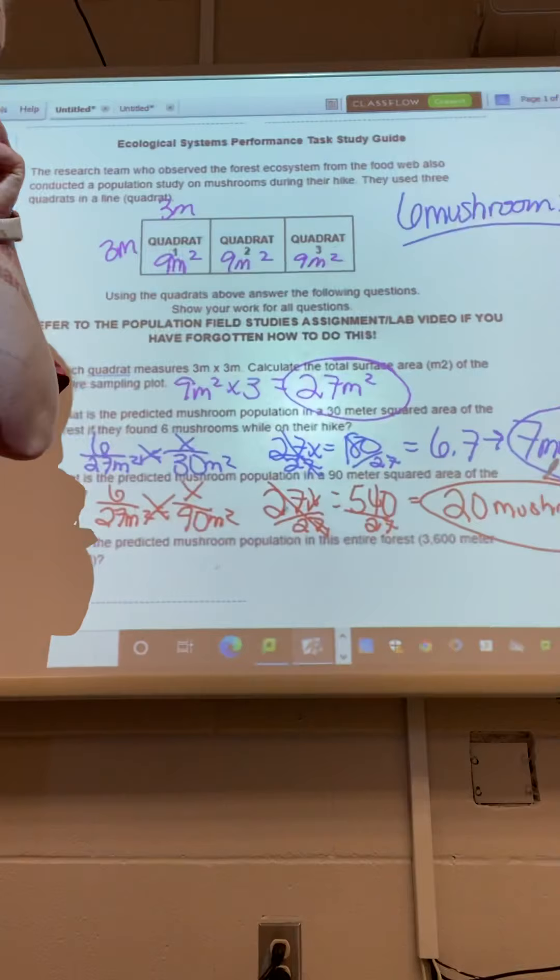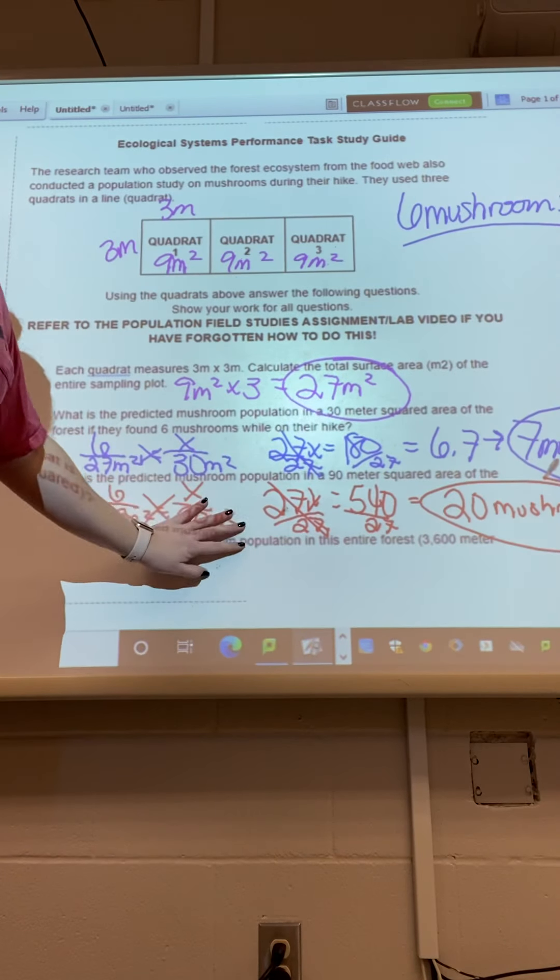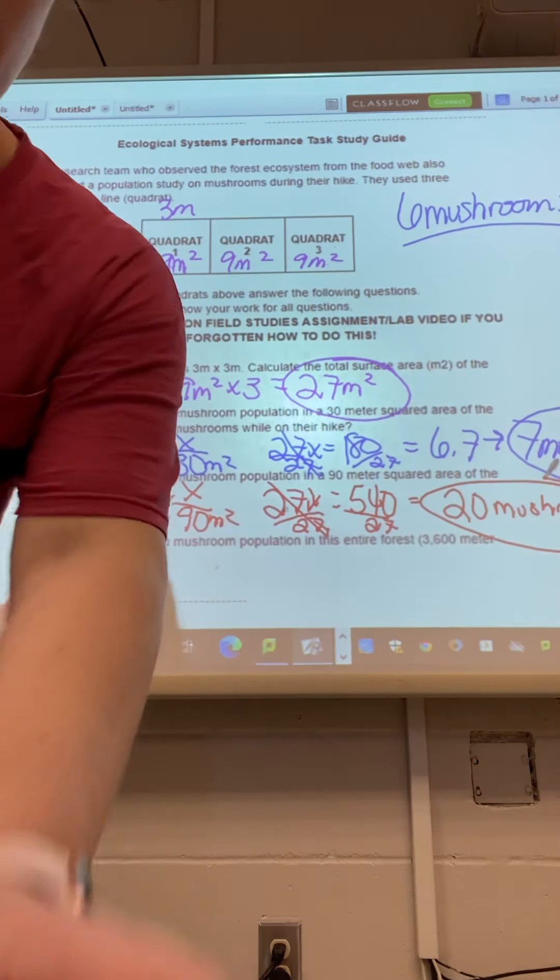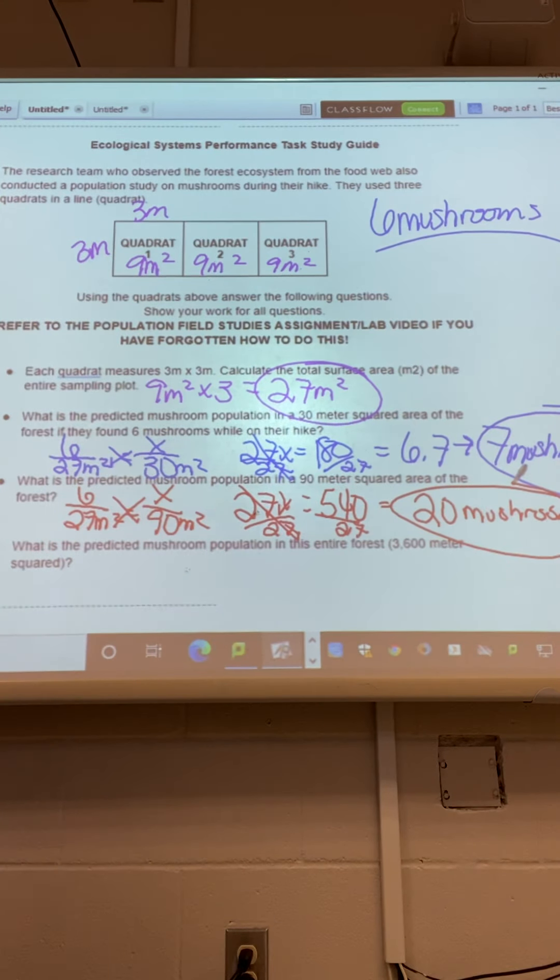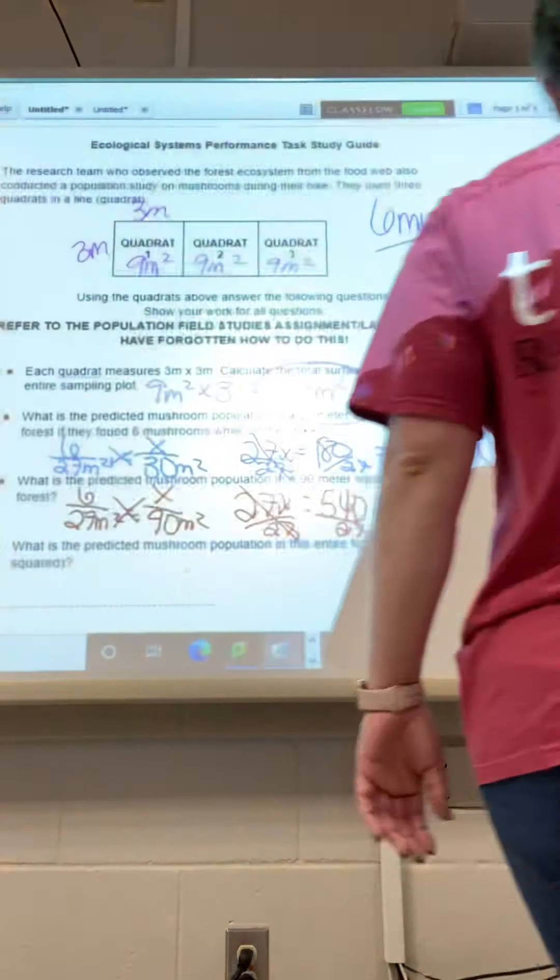Right. So we're just doing that probability math. Make sure you are showing your units. Okay. Got to show our units. And then the last question.